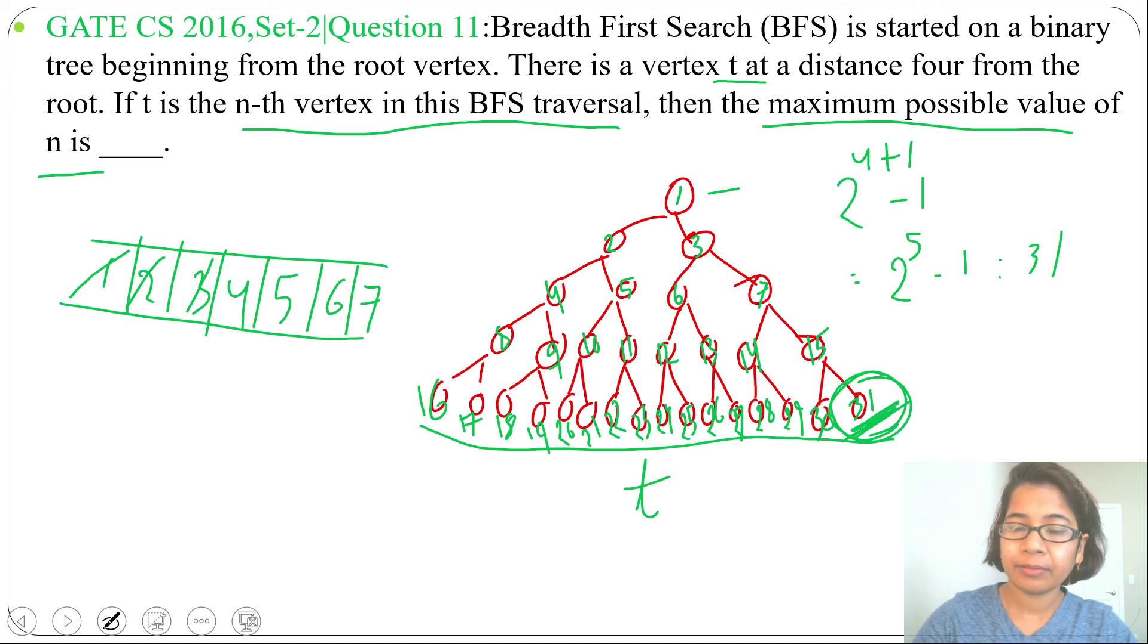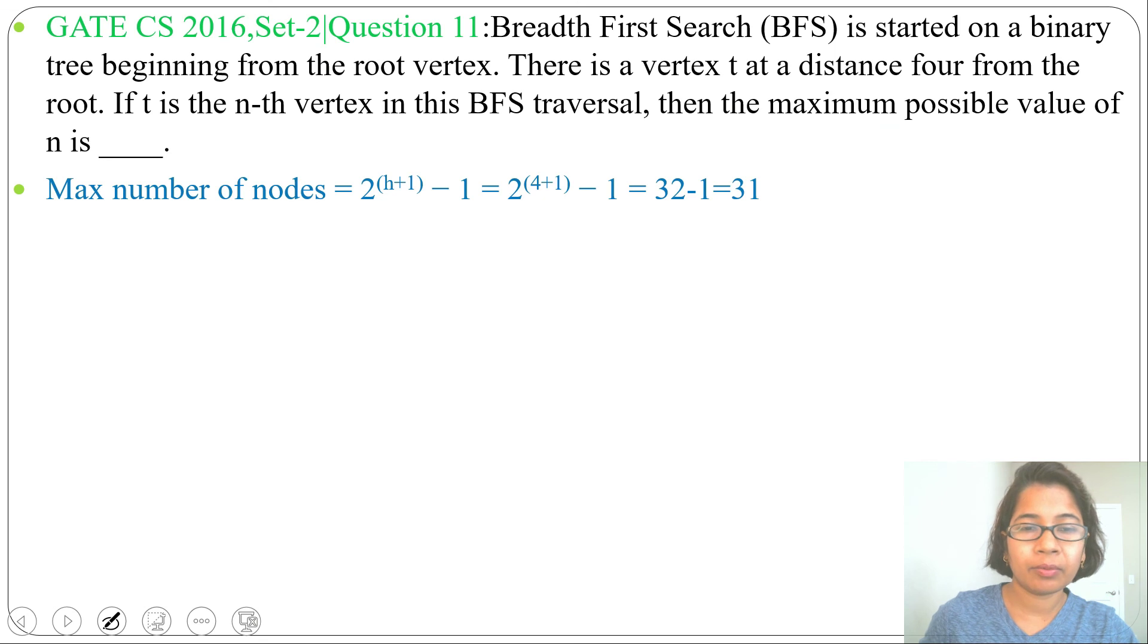If we do breadth-first search, the last node can be at position 31. So the maximum number of nodes is 31 at distance 4. The last node is 31, and that is our maximum node. The answer is 31.